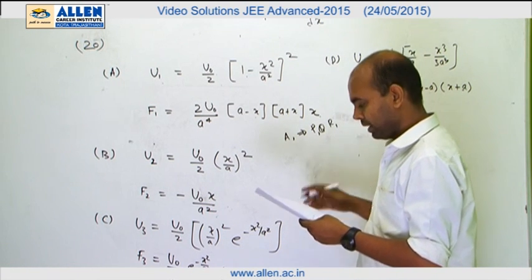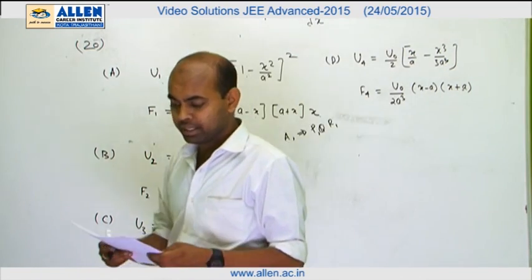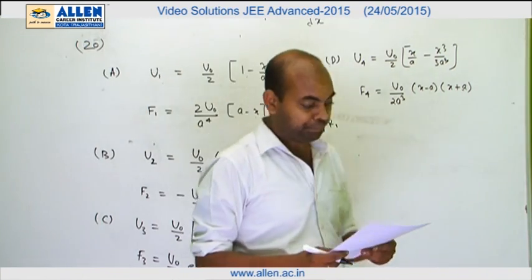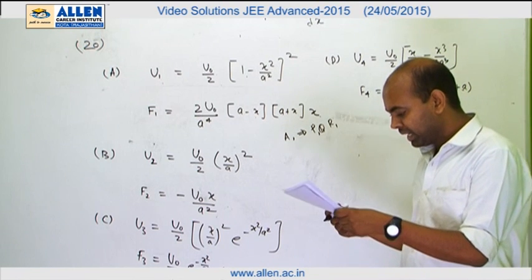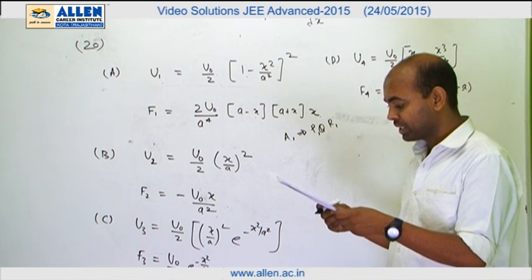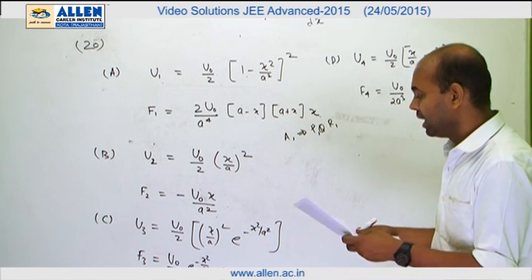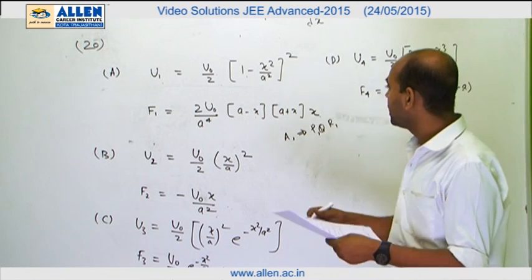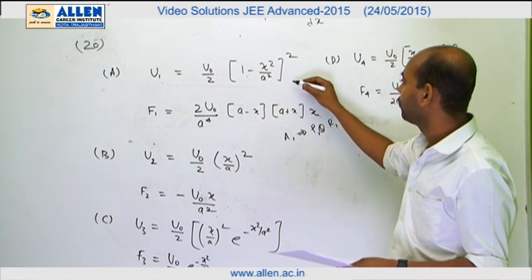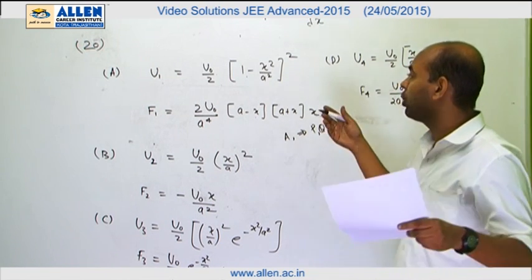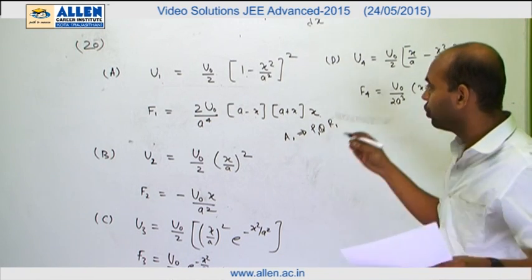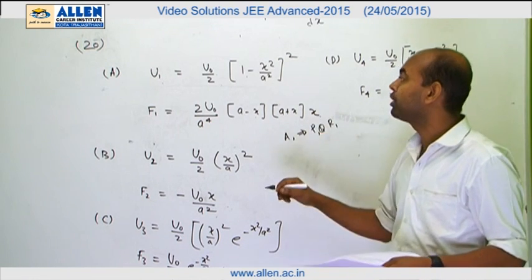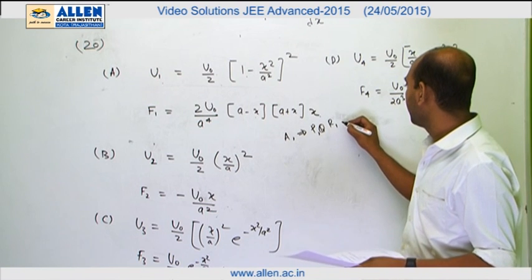So option A will go with P, Q, and R. For the S part, they say the particle experiences attractive force towards x = 0 when |x| < a. However, x = 0 is a point of maximum potential energy, making it unstable equilibrium. Particles don't settle there; rather x = ±a are stable equilibrium points where oscillation occurs.